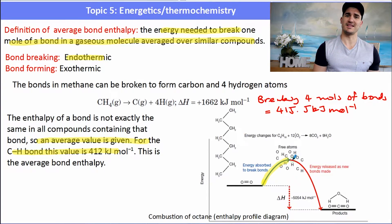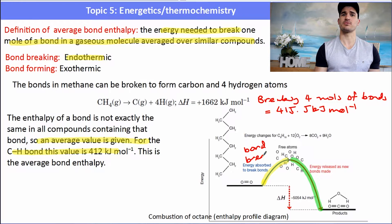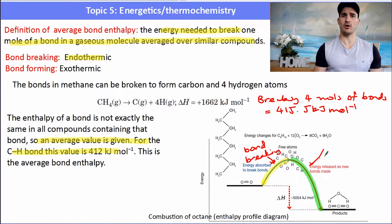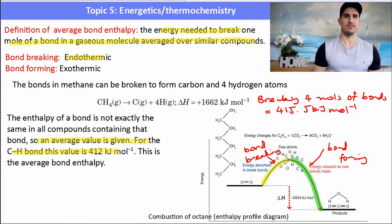On the energy profile diagram, the first part in yellow is the bond breaking section, where bonds in the reactants absorb energy and are turned into radicals. Once they've been turned into radicals, new bonds in the products can be formed — that is the exothermic part of the enthalpy level diagram, where energy is released.